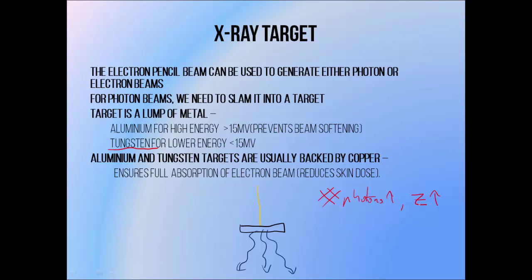Thinking back to photon interactions, in a high atomic number material when the beam energy is very high you also get a lot of pair production. This can decrease the energy of the beam being produced via beam softening, which is undesirable. So when producing very high energy photon beams such as 15 MV and above, we tend to use a low atomic number target material like aluminium. This helps to keep the beam energy high even if it is less efficient in terms of the number of photons produced. For lower energy beams we don't have to worry so much about beam softening because the pair production interaction is more rare, so we can use high atomic number materials like tungsten.